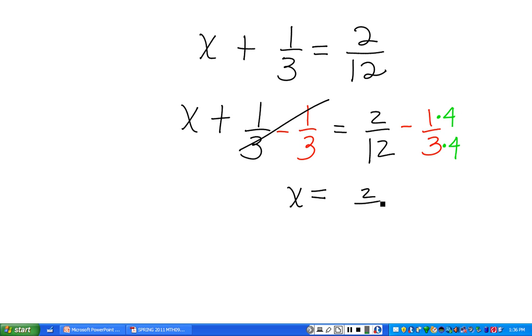Now we have 2/12. The equivalent fraction for this 1/3 is 4/12, since 1 times 4 is 4 and 3 times 4 is 12. Now that we have the same denominator, we can combine the numerator. So we have 12 and we have 2 minus 4. x equals what is 2 minus 4? Negative 2/12. And since we waited to the end to reduce this, the answer is really negative 1/6.